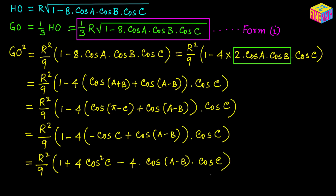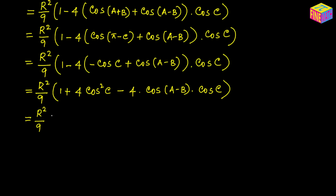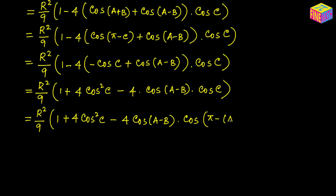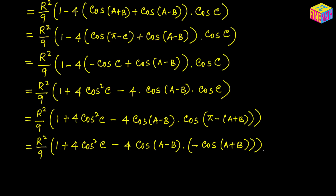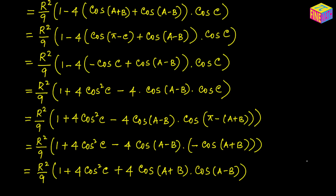Next, since C equals π minus (A plus B), cosine C can be written as cosine of (π minus (A plus B)), which equals negative cosine(A plus B). Substituting this in, the expression becomes R squared over 9 times (1 plus 4 cosine squared C minus 4 times cosine(A minus B) times negative cosine(A plus B)), which simplifies to R squared over 9 times (1 plus 4 cosine squared C plus 4 times cosine(A plus B) times cosine(A minus B)).